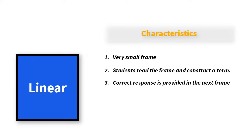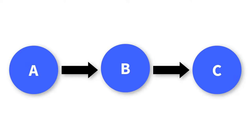That is to say, whether they are wrong or right, they proceed. It is linear, just like that. If you look at the image on the screen, it shows you the direction. The arrow shows that the student or the learner moves from A to B to C — there are no branches.